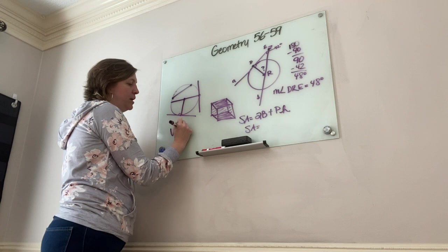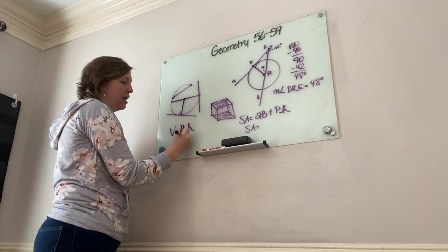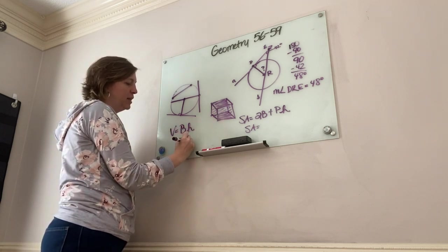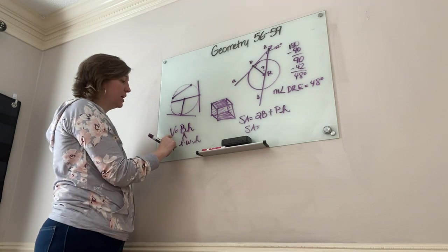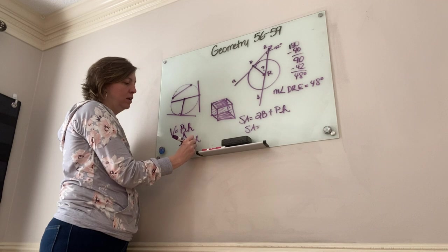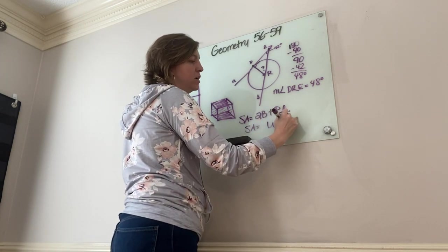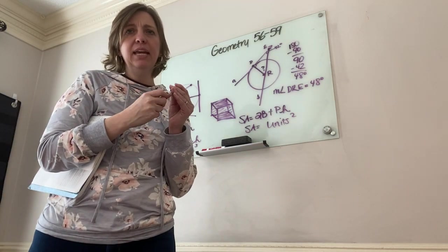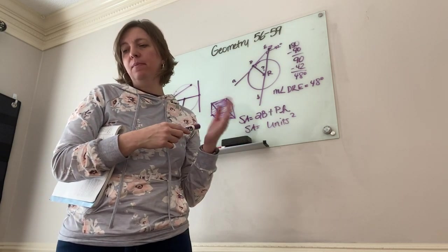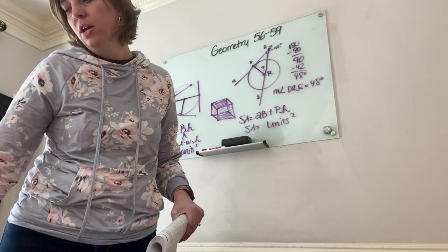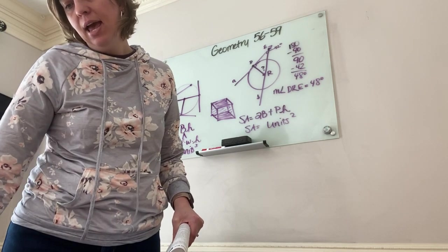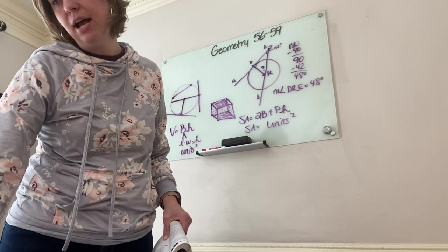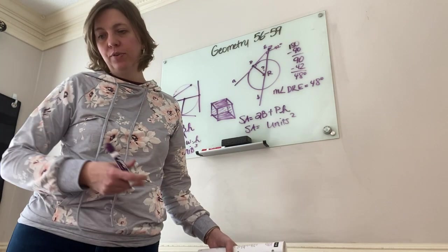The volume of any prism is V = BH, where B is the area of the base. For a rectangular prism, that's length × width × height. Don't forget: volume is always units cubed, and surface area is always units squared. Formulas are on pages 389 and 390.